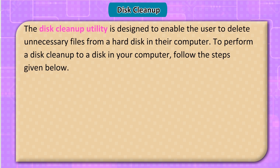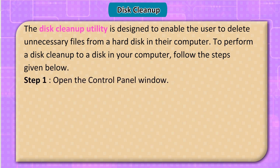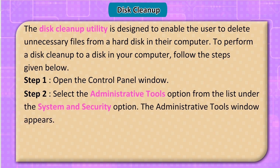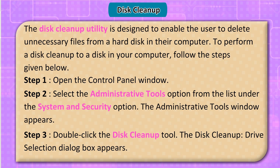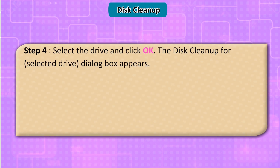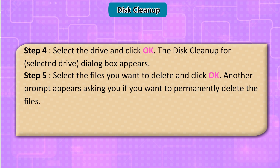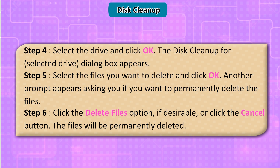The Disk Cleanup utility enables the user to delete unnecessary files from a hard disk. To perform a disk cleanup: Step 1: Open the Control Panel window. Step 2: Select Administrative Tools under System and Security. Step 3: Double-click the Disk Cleanup tool. The Disk Cleanup Drive Selection dialog box appears. Step 4: Select the drive and click OK. Step 5: Select the files you want to delete and click OK. A prompt asks if you want to permanently delete the files. Step 6: Click Delete Files to confirm, or Cancel.